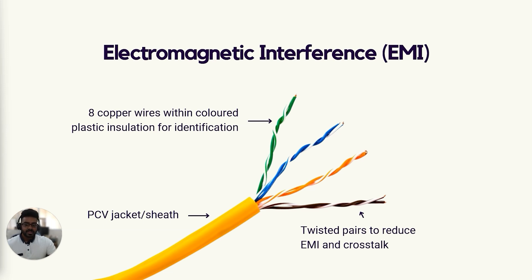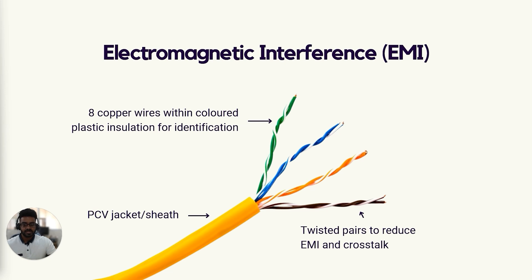By twisting two cables together, the electromagnetic fields generated by each wire cancel each other out and greatly reduce crosstalk. In fact, the tighter the wire pairs are twisted, the more EMI is reduced. Because EMI can come from many different sources — not just the cable's wires — twisted pair cables come in two different types: UTP and STP.